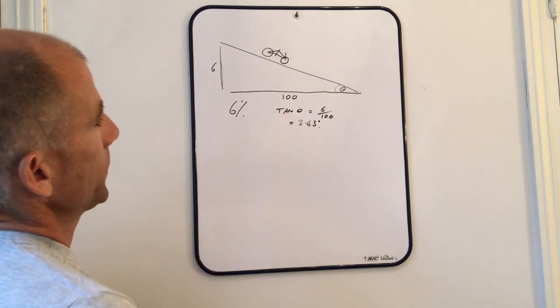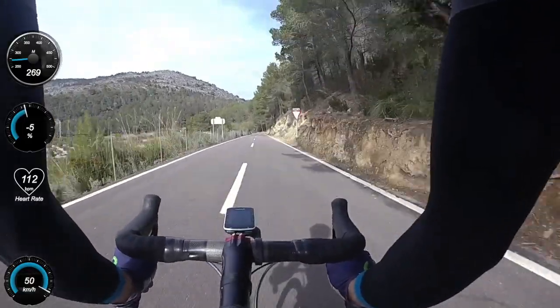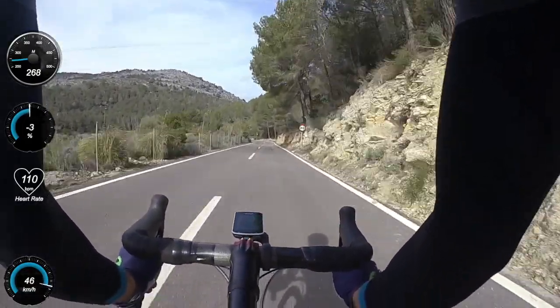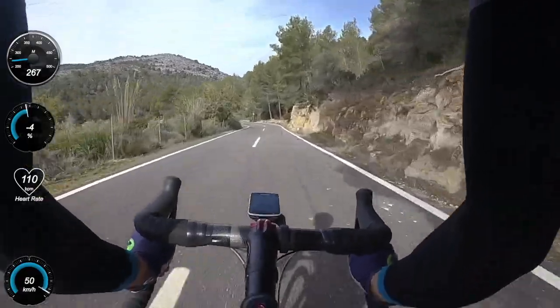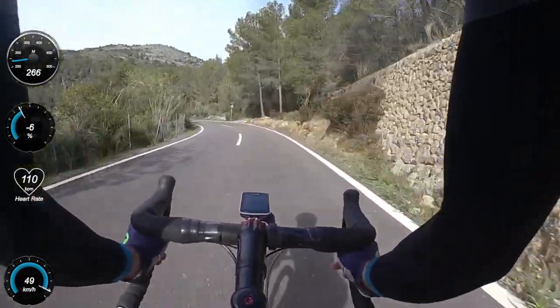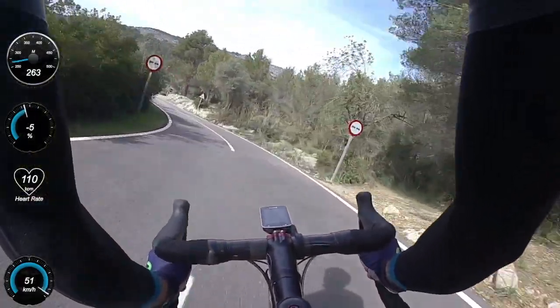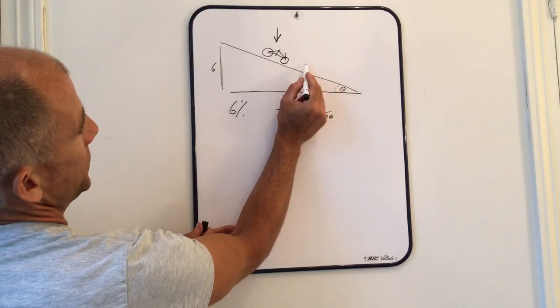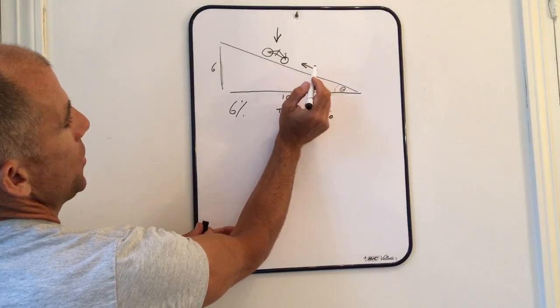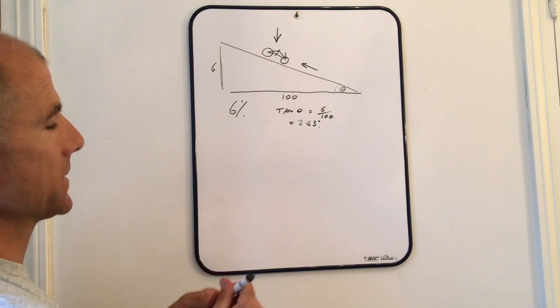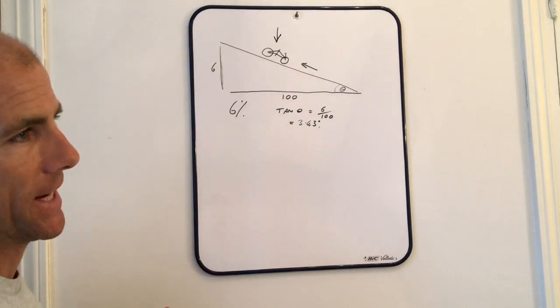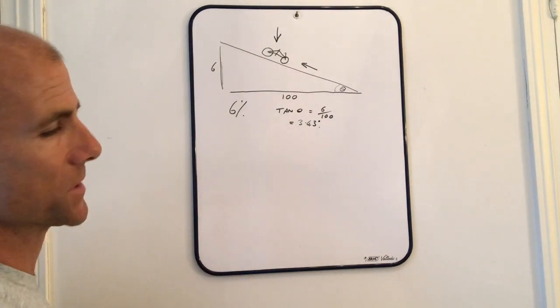When you're going down this slope, obviously we're going to look at the two main forces against you, which are gravity, which is acting down you like this, and wind resistance, which is acting against you like this. So we're going to ignore things like tire rolling resistance and losses in the chain and stuff, just to keep it a bit more simple.